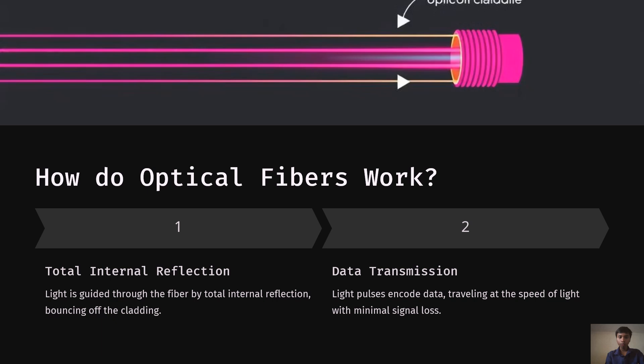How do optical fibers work? They work on the principle of total internal reflection — that is, light is guided through the fiber by total internal reflection, bouncing off the cladding. The second principle is data transmission: light pulses encoding data travel at a certain speed with minimal signal losses.